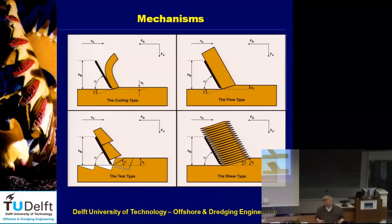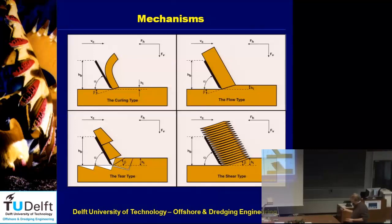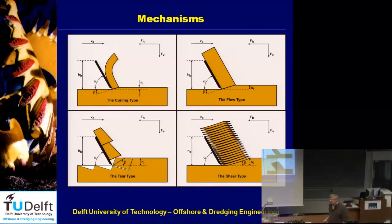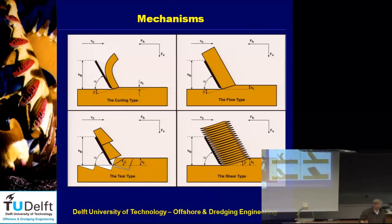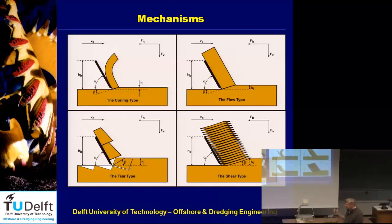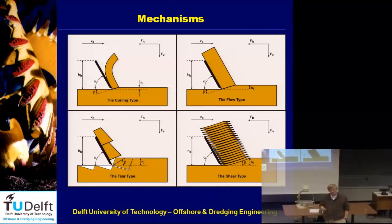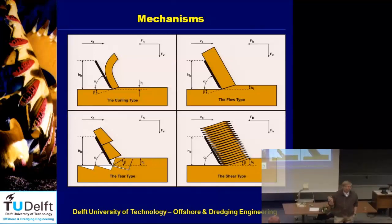In clay, you can have the curling type, the flow type, and the tear type. The curling type occurs when you have a thin layer of material with high adhesion. The flow type is the mid-range. The tear type occurs when you have a thicker layer of material, not a lot of adhesion, but a small tensile strength.